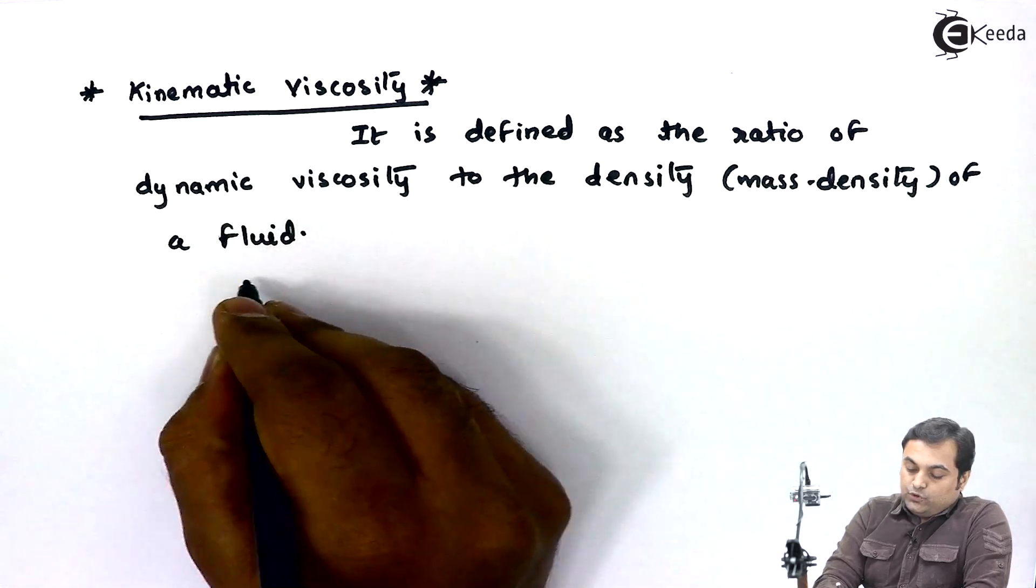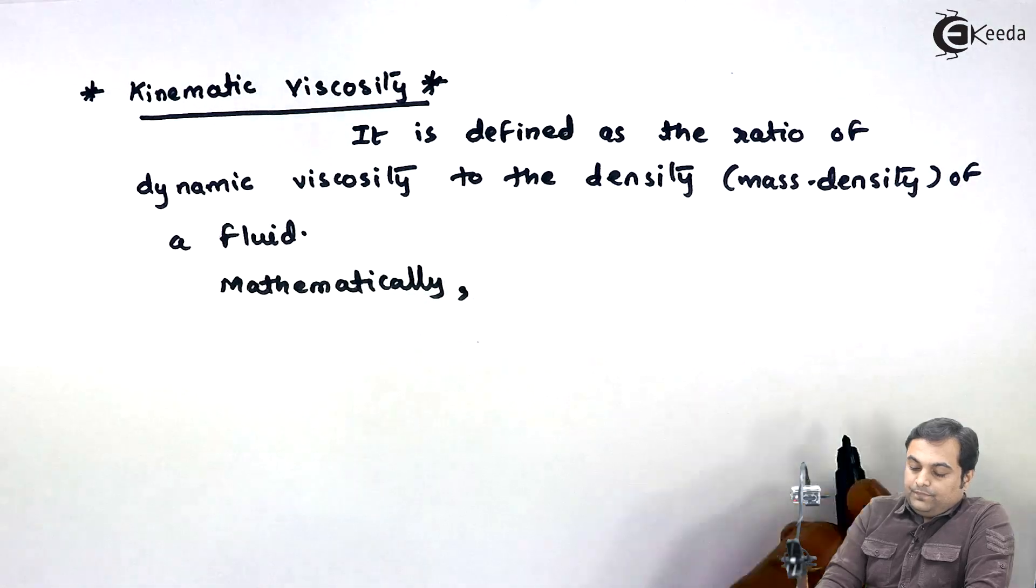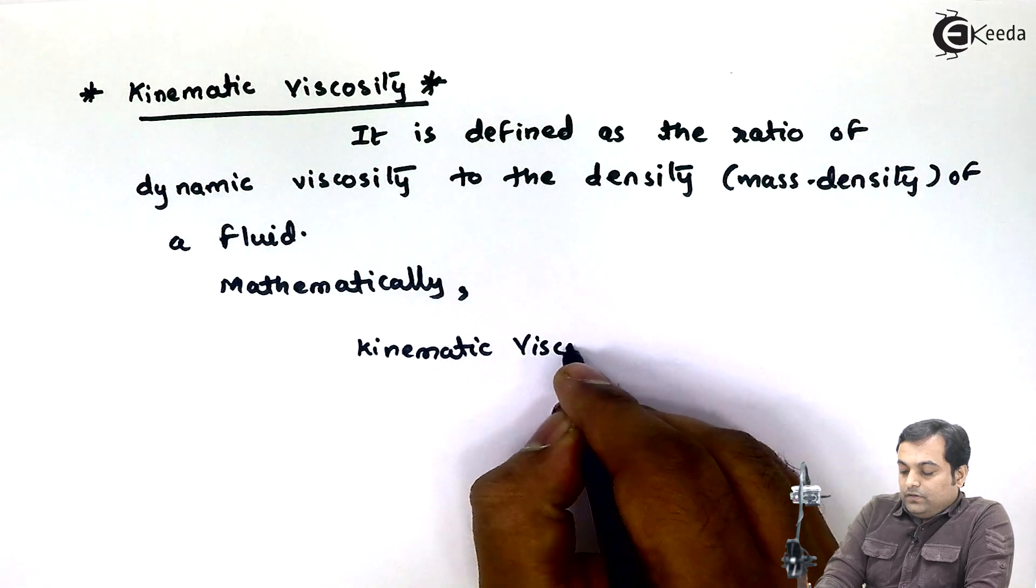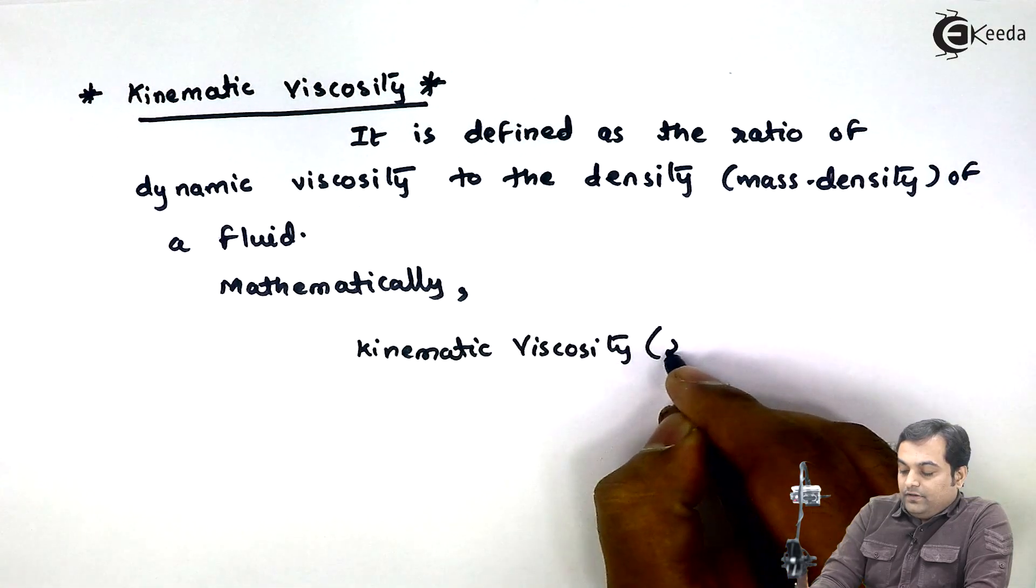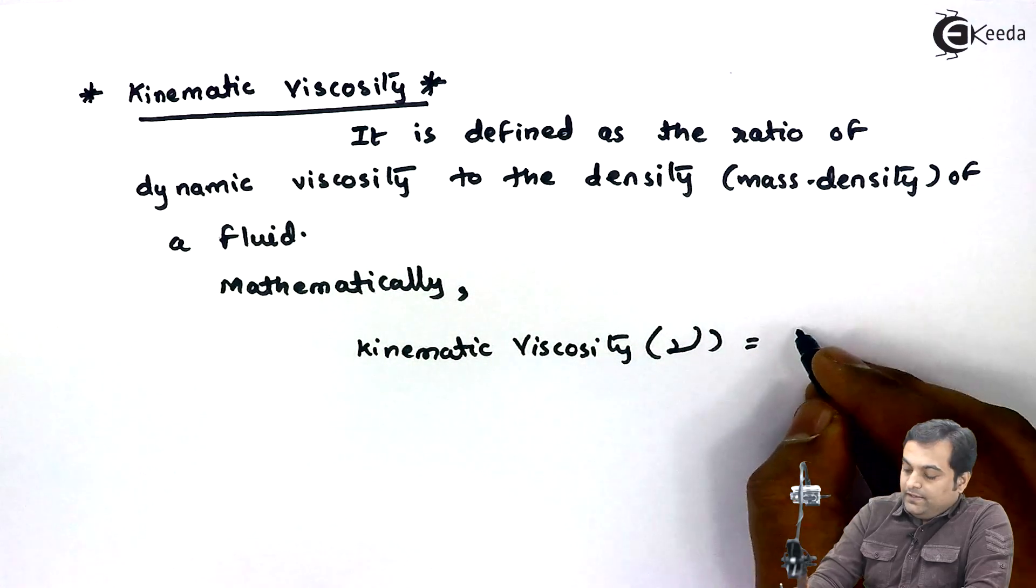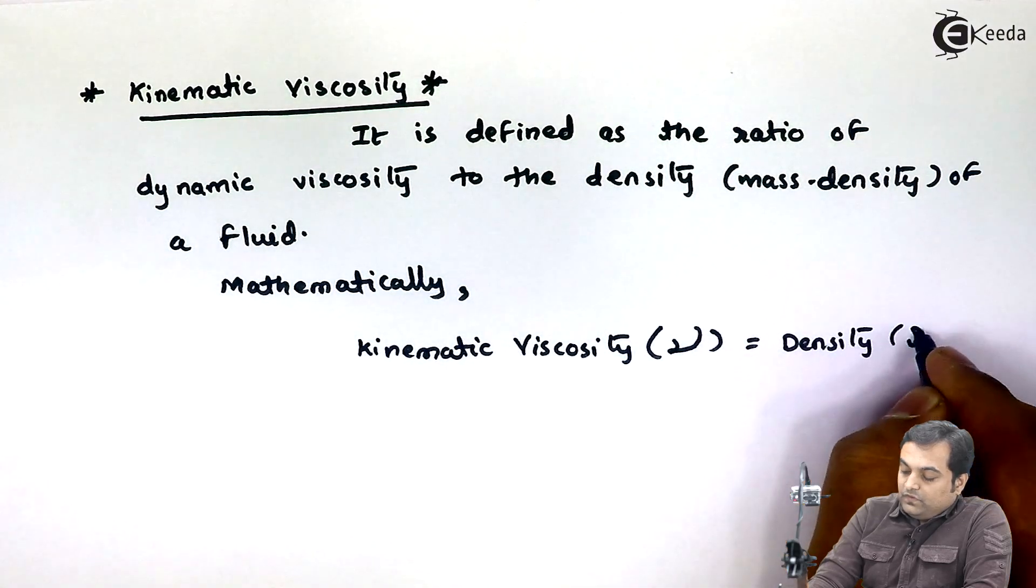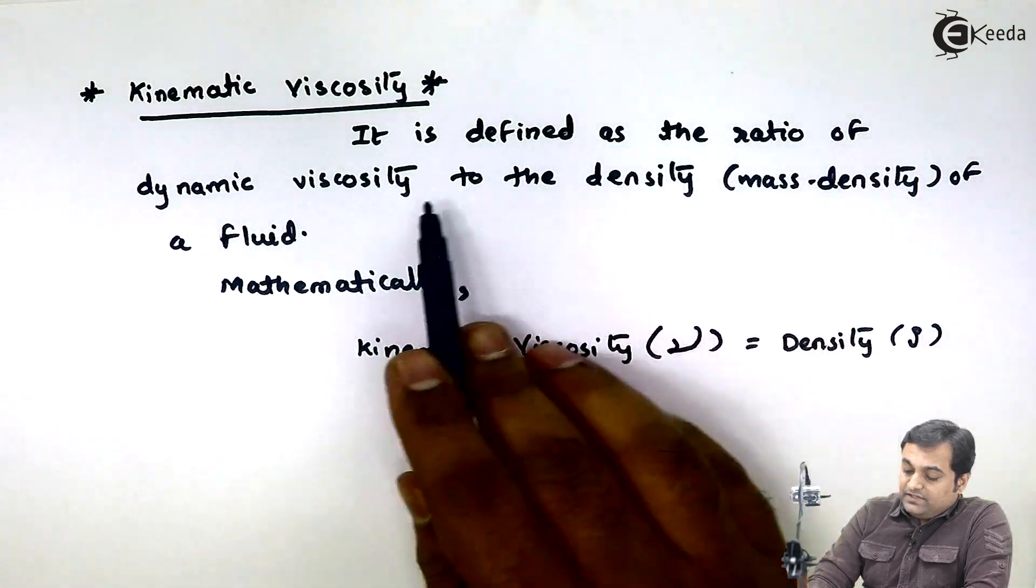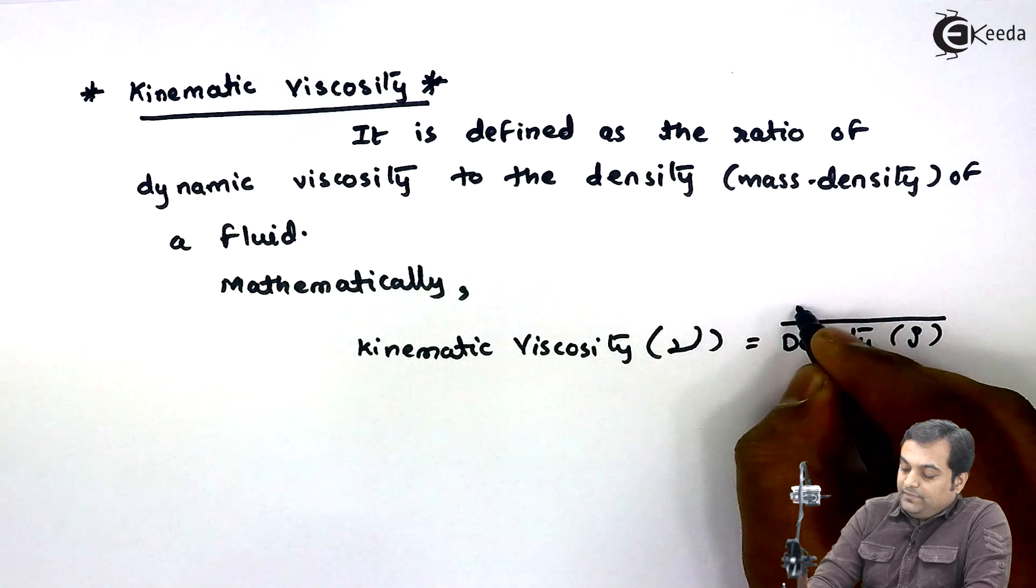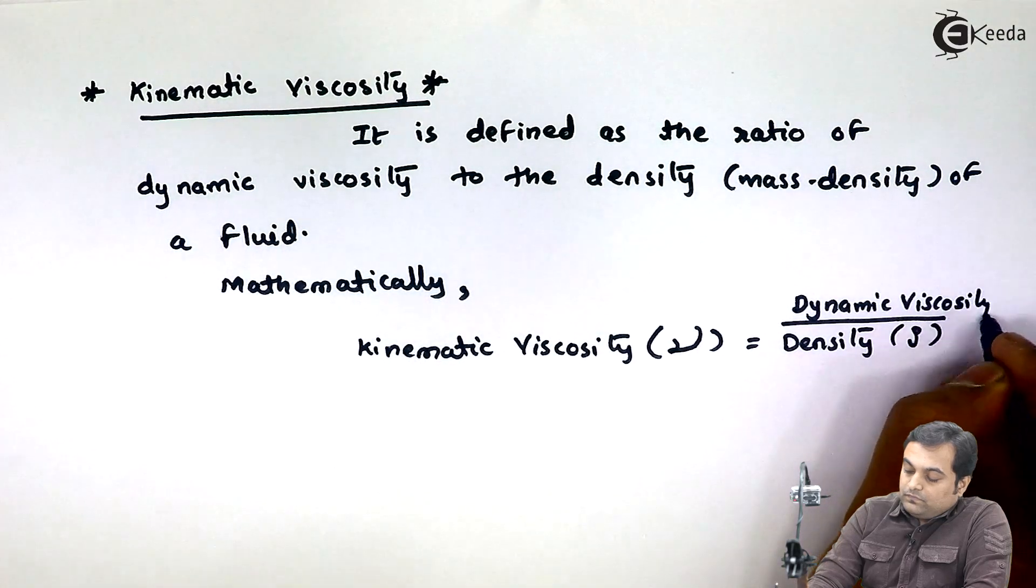So mathematically, kinematic viscosity is denoted by Greek letter ν (nu), and this is given by mass density or simply density which is ρ (rho). It is dynamic viscosity to density, so here I have this as dynamic viscosity that is